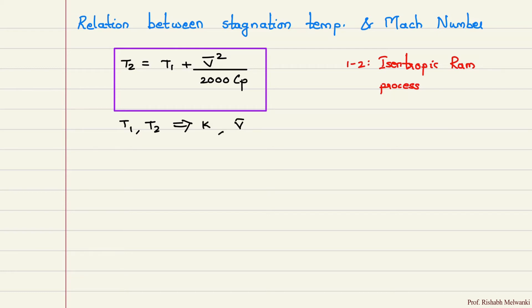Velocity is in meters per second and Cp value is in kilojoules per kilogram Kelvin. Now suppose in the numerical, instead of this type of data, Mach number is given. Instead of giving velocity of aircraft or velocity of air, Mach number is given. So how to find temperature T2 in that case? That we are going to study in this derivation.